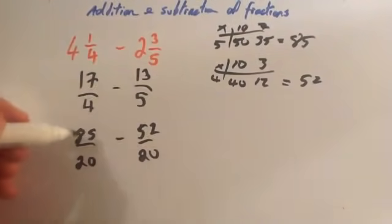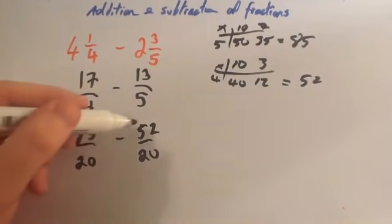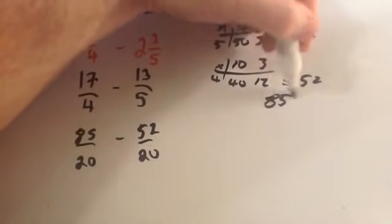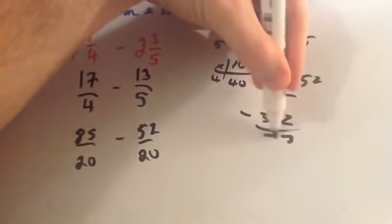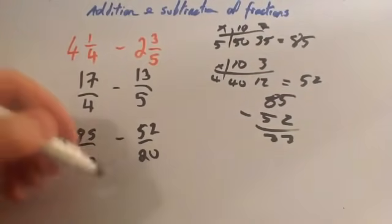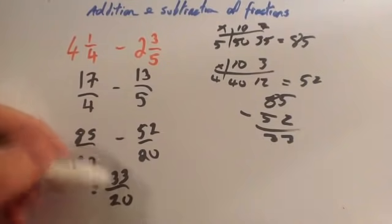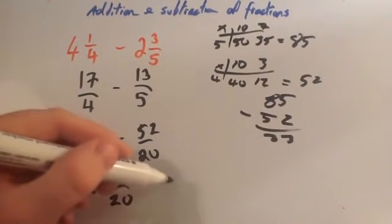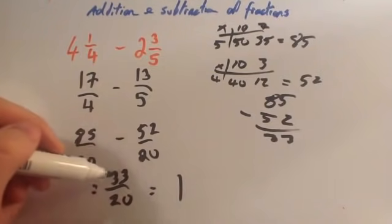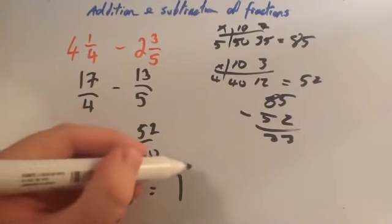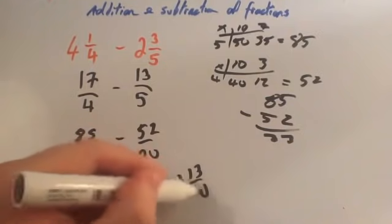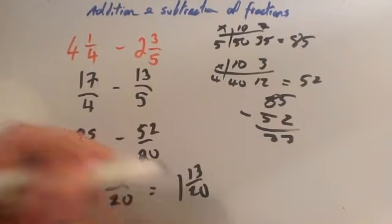So we've got eighty-five-twentieths subtract fifty-two-twentieths. We need to do eighty-five subtract fifty-two, which gives us thirty-three. So the answer is thirty-three over twenty. Now remember, this is a top-heavy fraction — the line means divide. How many twenties go into thirty-three? One twenty goes into thirty-three with a remainder of thirteen. So the answer is one and thirteen-twentieths.